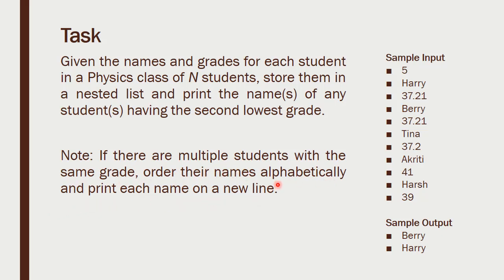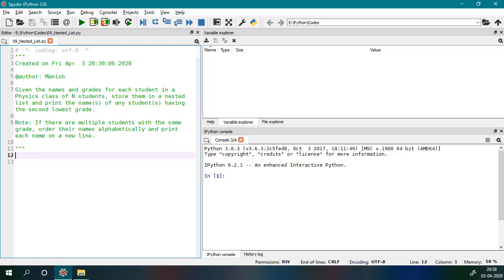In the sample input, the first value is the number of students, then we have entered names and marks of five students. The output is showing two names, meaning two students have the second lowest grade. As we can see, Harry and Barry have the same grade and it is the second lowest grade among all these grades. So let's see how we can code this problem.